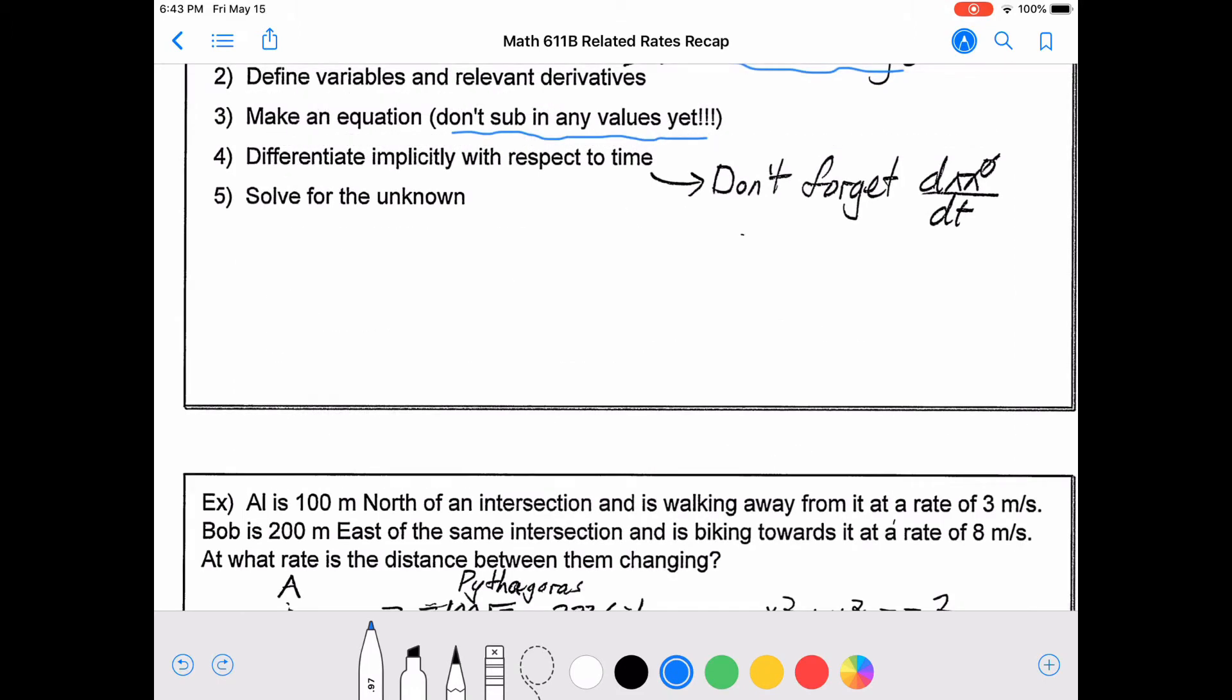Here's a question about Al, who's 100 meters north of an intersection and is walking away from it at a rate of 3 meters per second. So if I were to draw that, if this is Al over here, he's walking away, the distance is 100 meters.